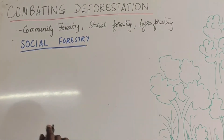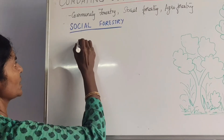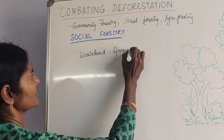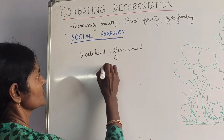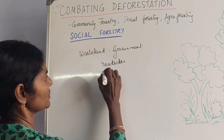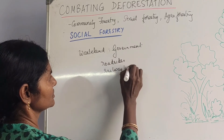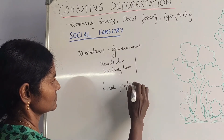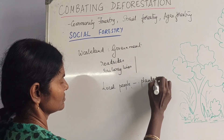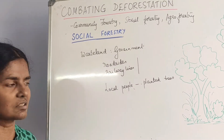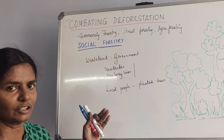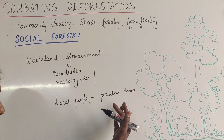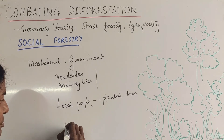Next, we move on to social forestry. Usually if you see wasteland that belongs to the government — uncared government wasteland along roadsides, railway lines, etc. — this is given to local people. Trees, bushes, and plants are planted, and this wasteland is converted into green land. Whatever trees or crops they plant, the yield goes to the local people, so they are benefited.